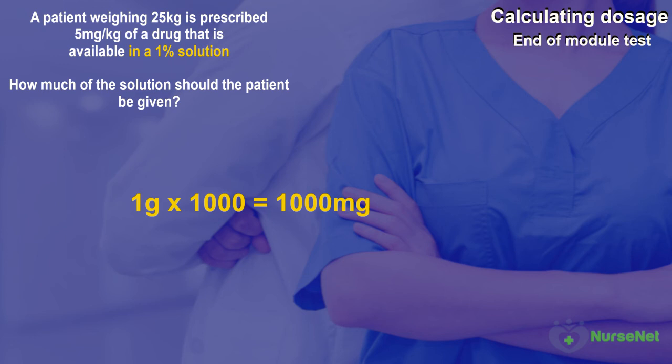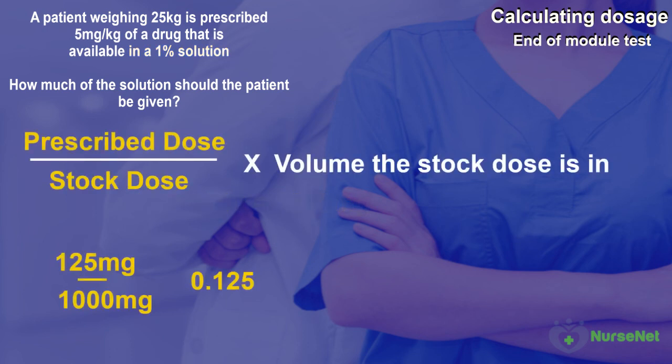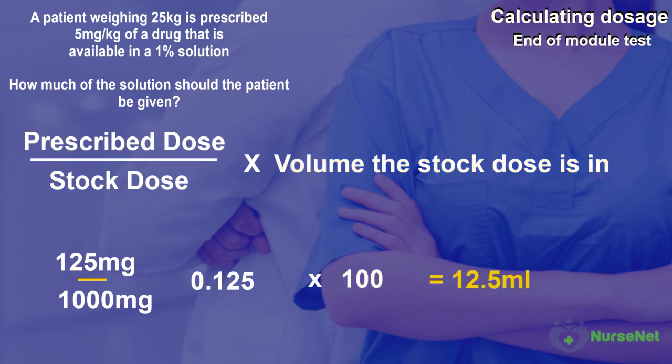Now we've got our prescribed dose and our stock dose in the same metric unit, milligrams, we can input these figures into our basic drug dose calculation of prescribed dose divided by stock dose multiplied by the volume the stock dose is in. So we've got 125mg divided by 1000mg, which gives us 0.125. 0.125 multiplied by the 100ml solution gives us our answer of 12.5ml.